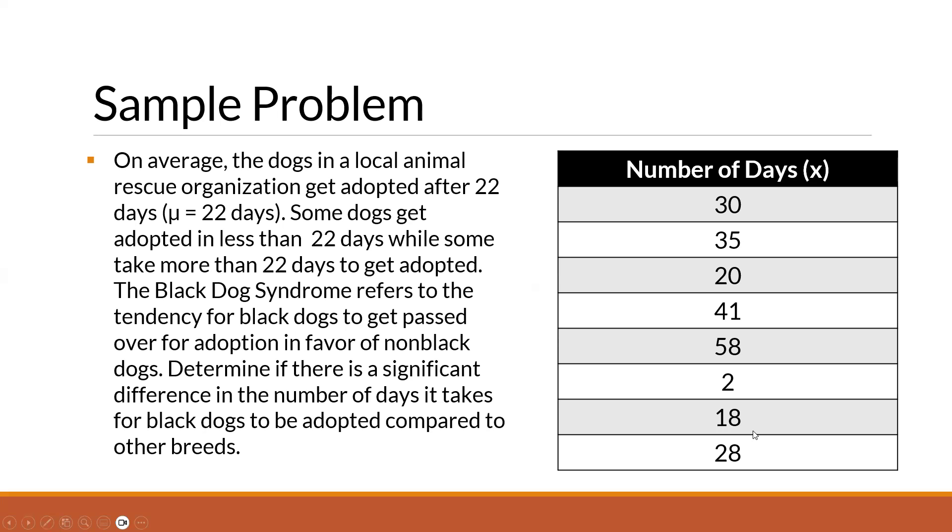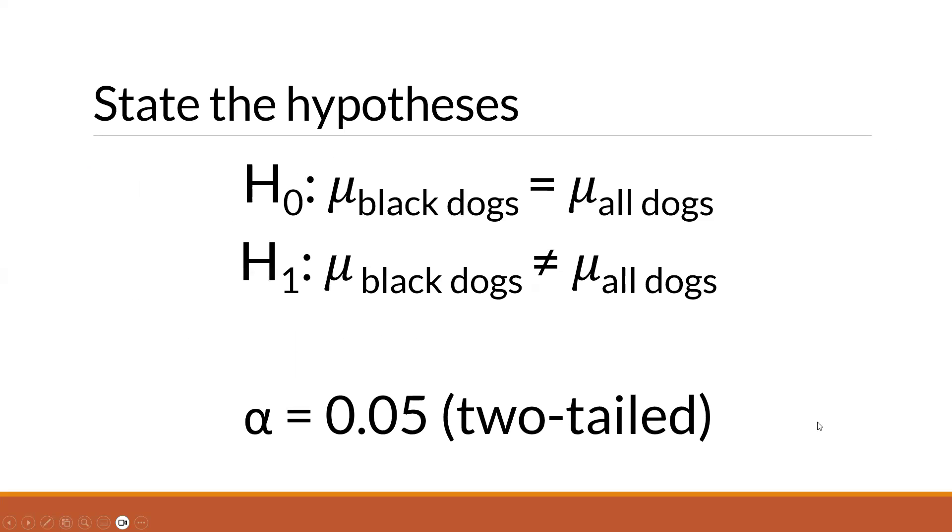So first and foremost, let me state the hypothesis. For our null hypothesis, there is no significant difference between the mean of black dogs and the mean of all dogs. And for the alternative hypothesis, there is a significant difference between the mean of black dogs and the mean of all dogs. And the alpha level that I have chosen is 0.05, and we're going to run a two-tailed test since our hypotheses are also in two-tail.